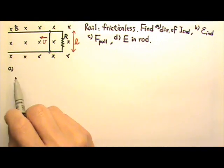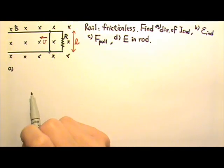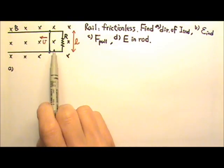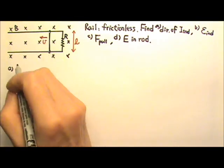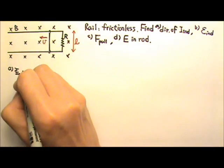For part A, first we look at whether the flux is changing or not, whether it's increasing or decreasing. When the bar gets pulled to the left, the area gets bigger, so the flux through the loop, I mean this part of the loop, increases.